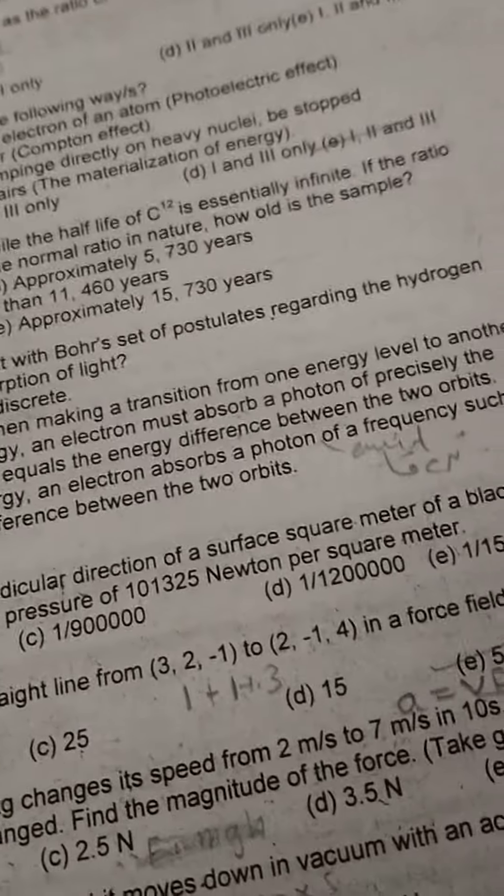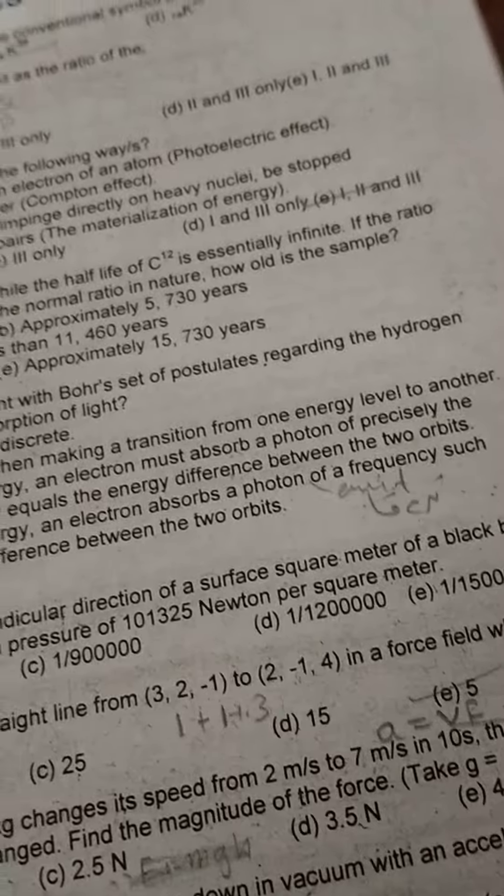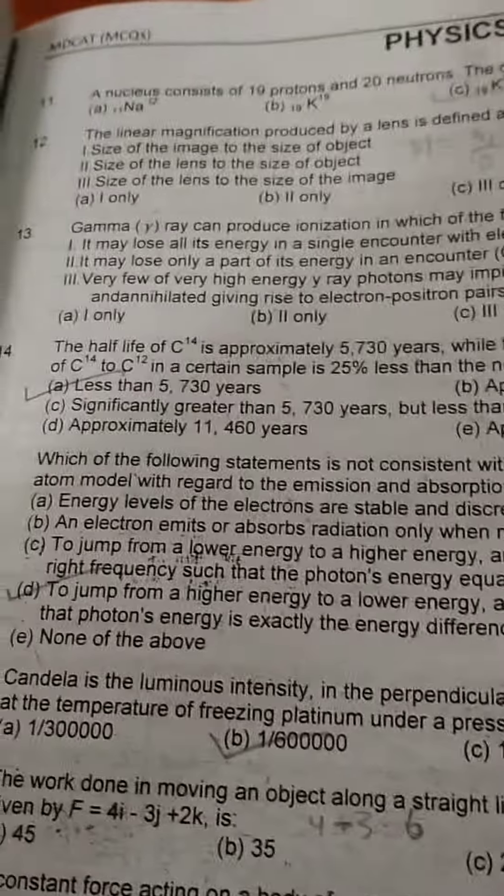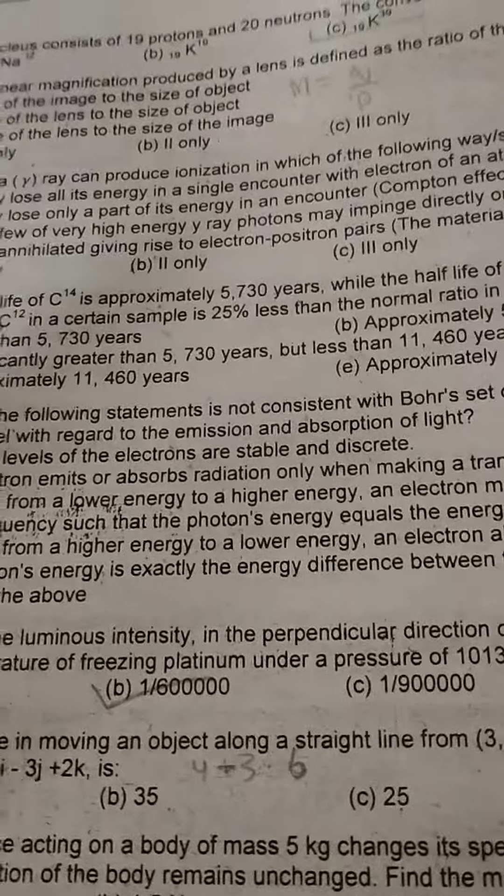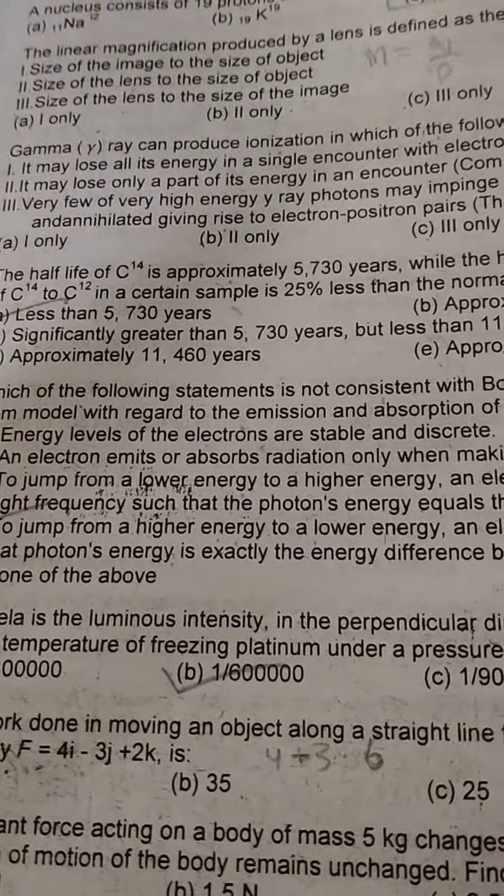Which of the following statements is not consistent with Bohr's set of postulates regarding the hydrogen atom model with regard to emission and absorption of light? Option A: Energy levels of the electrons are stable and discrete.